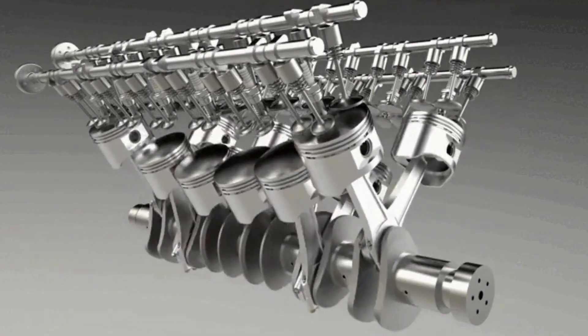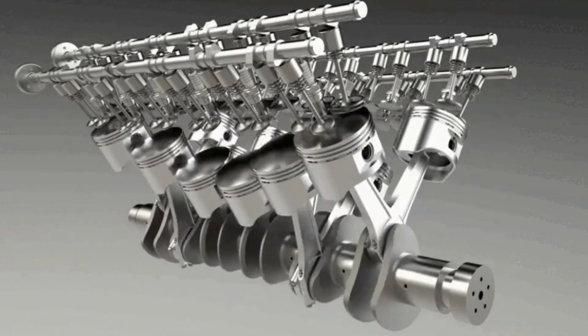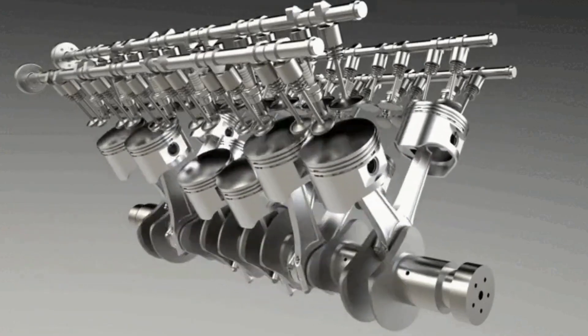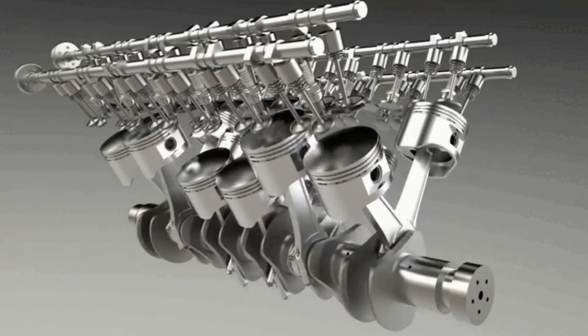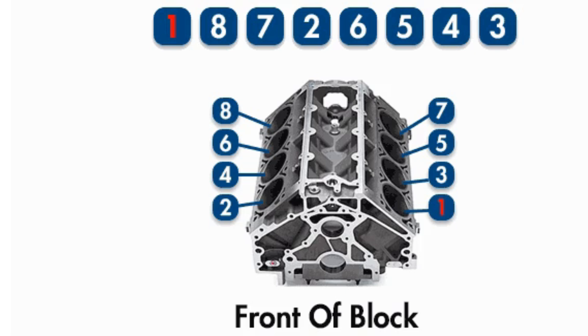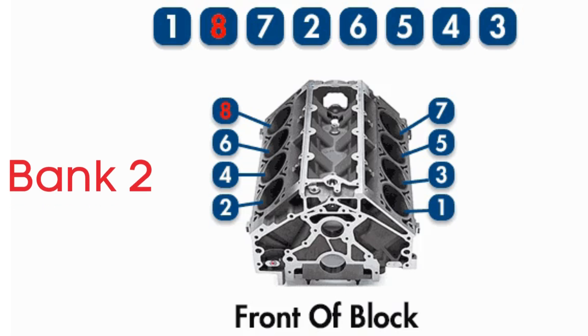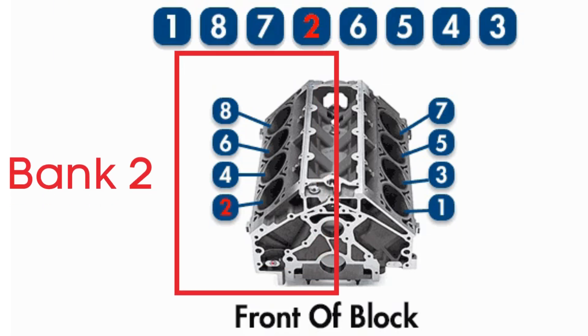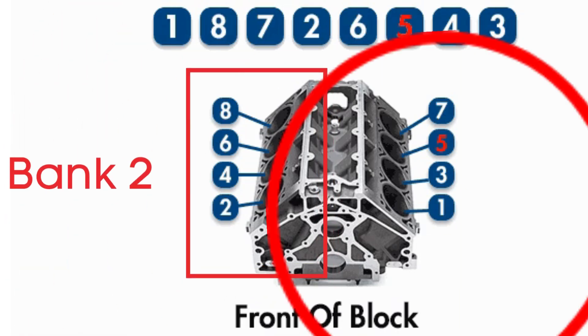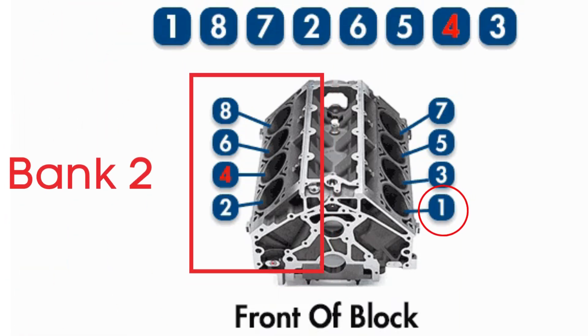The exhaust camshaft controls the opening and closing of the exhaust valves. Bank two typically refers to the opposite side of the engine where cylinder one is located.